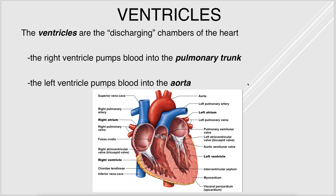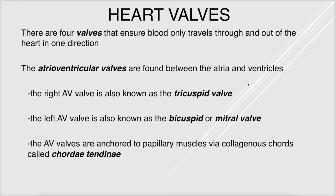The ventricles are the discharging chambers. The right ventricle pumps blood into the pulmonary trunk, which directs blood to the lungs. The left ventricle pumps blood into the aorta, which goes to the body. The heart has four valves, and their purpose is to ensure blood only flows in an antegrade fashion — only forward and not backwards. The atrioventricular valves are between the atria and the ventricles, and these valves are anchored to muscles in the ventricles called papillary muscles, which have collagen extensions called chordae tendineae that contact the valve flaps.